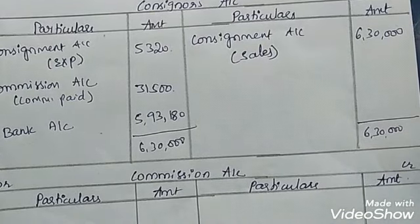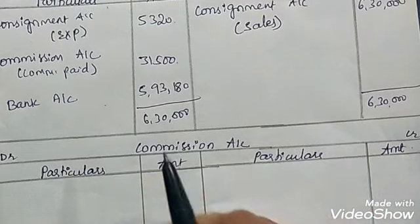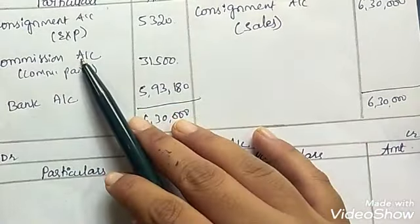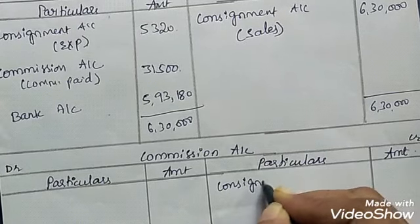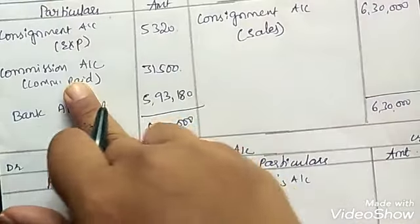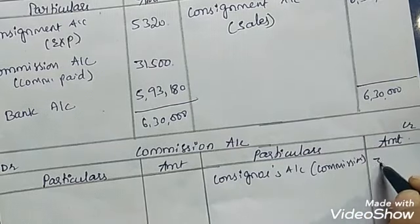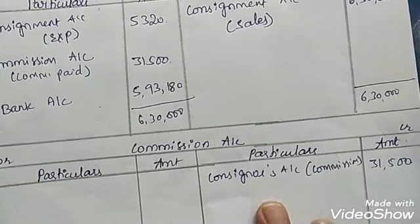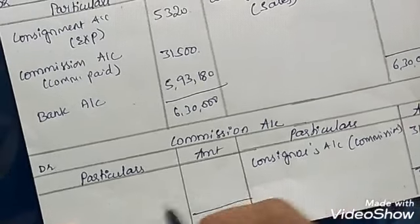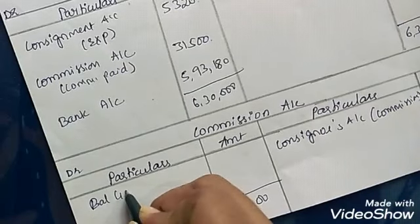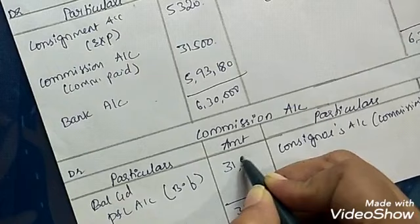Finally, the Commission Account in the books of the consignee is optional. Record consignor's account on the credit side for commission ₹31,500. The balancing figure of ₹31,500 is carried down and goes to the P&L account as commission income for the consignee.